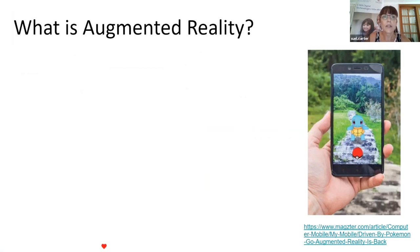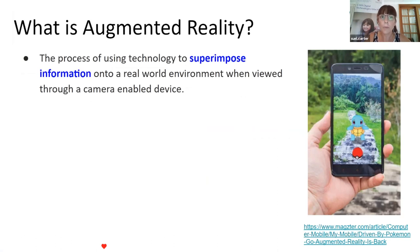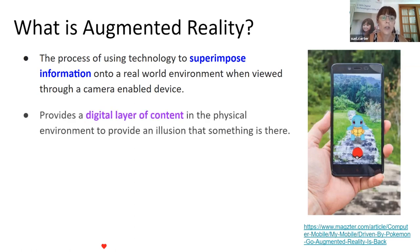Let's get into today's session. What is augmented reality? Basically, it's a process where, by using technology, we can superimpose information into our real-world environment. When that's viewed through a device with a camera, we can see this information — it's like a digital layer of content placed into the physical environment. It's not really there; it's an illusion, something you can only see through the camera of your device.